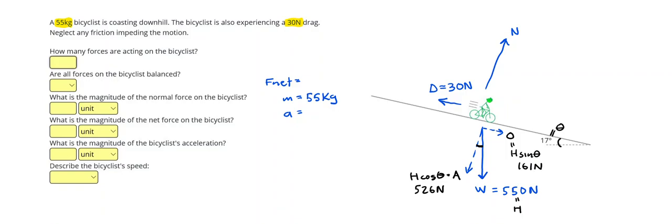Alright, so remember that we can immediately cancel out the hypotenuse because it's been replaced by those opposite and adjacent sides. And now this normal force is going to equal 526 N. And that's going to cancel out this component of the weight.